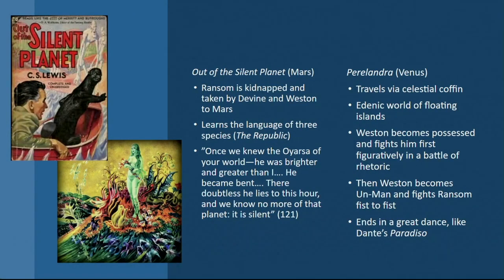The previous two novels that lead up to That Hideous Strength are called Out of the Silent Planet and Perelandra. Out of the Silent Planet takes place on Mars, Perelandra takes place on Venus, and That Hideous Strength takes place on Earth. The reason we have these two prequels is that Out of the Silent Planet involves the space travel that was so attractive to Lewis.